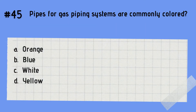Question 45: Pipes for gas piping systems are commonly colored as what? A. Orange. B. Blue. C. White. D. Yellow. The answer is D — yellow. Remember that yellow is the color of the pipes for a gas piping system. Yellow for gas pipes.